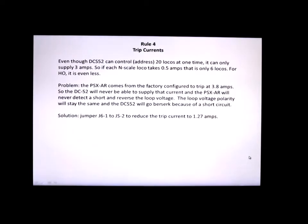Okay, rule number four, trip currents. Now the DCS says it can control 20 locos at one time. However, it only can supply 3 amps of current. So in my case, I have an N scale layout. If each loco is half an amp, that's only six locos. And for HO, it's got to be less, right? Because they take more current, I would think.